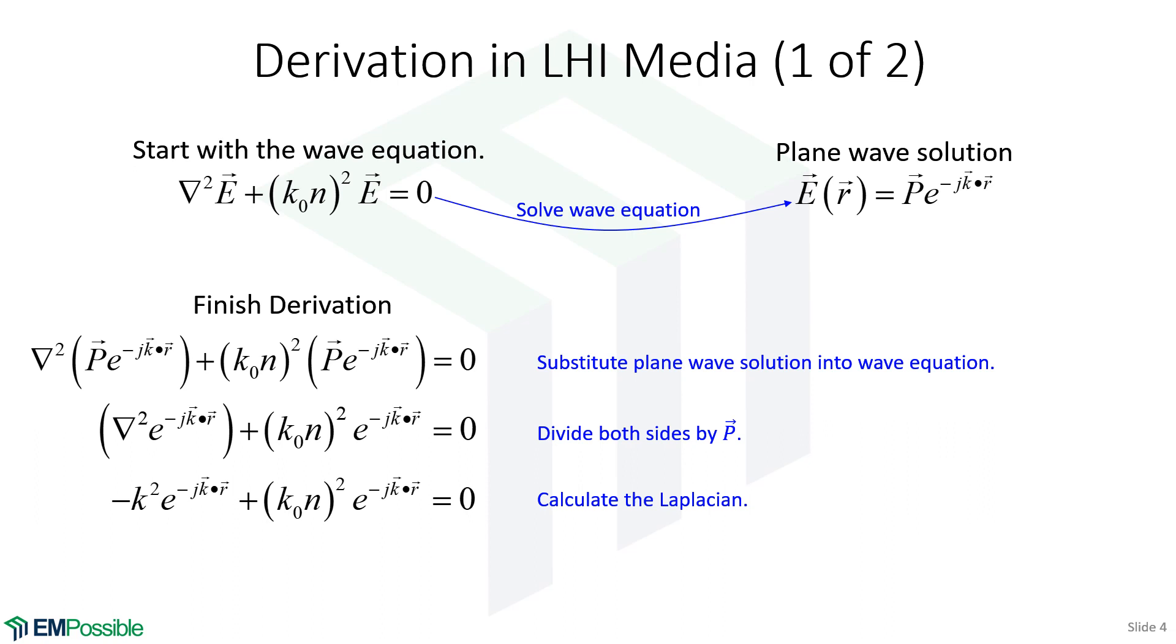We calculate the Laplacian, and if we think of this as just a second-order derivative, what happens is this minus jk comes out twice, and when we square that, we get a minus k squared. There actually is a few more steps in here. You'll expand this in the Cartesian coordinates, but in the end, that's what you get. We get a minus jk, all of that squared, which ends up just being minus k squared. Now we can divide both sides of the equation by that exponential term, and we are almost there.